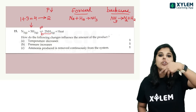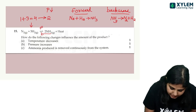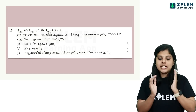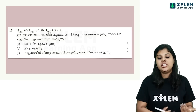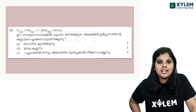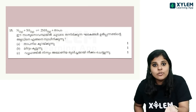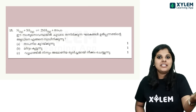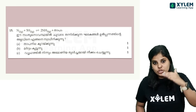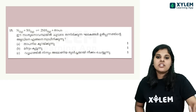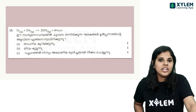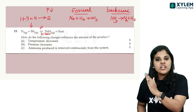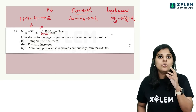So we have to remove ammonia. If we remove the ammonia, the system will compensate by producing more ammonia through the forward reaction. This shifts the equilibrium towards the forward reaction. It is a very important reaction.